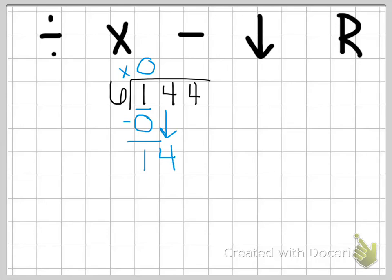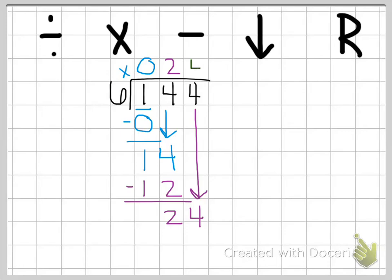Now we need to repeat our steps. We have 14 divided by six. I know six times two is 12, and six times three is 18, which is too much. So six goes into 14 two times. Multiply: six times two is 12. Subtract: 14 minus 12 is two. Then bring down the next digit. Now we have 24. 24 divided by six — I know that six times four is 24. So six goes into 24 four times. Six times four is 24, and when we subtract I get zero. There's nothing left to bring down, so my remainder is zero.